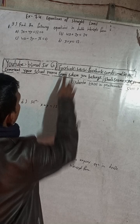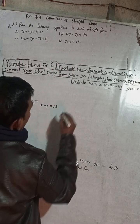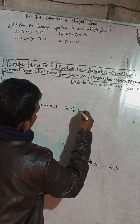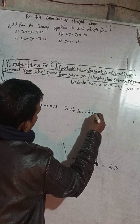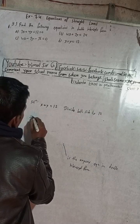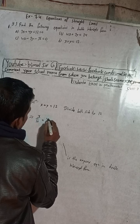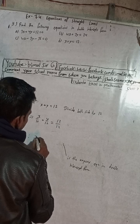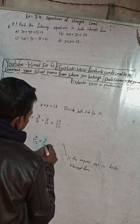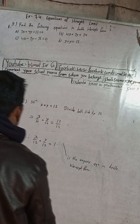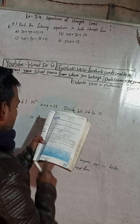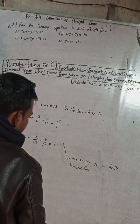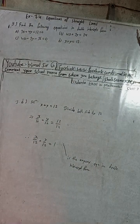The equation is x plus y equals 2l. Dividing both sides by 2l, we get x/2l plus y/2l equals 1. This is the required equation in double intercept form.